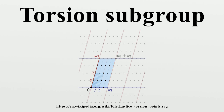Tensoring an abelian group A with Q kills torsion; that is, if T is a torsion group then T⊗Q = 0. For a general abelian group A with torsion subgroup T, one has A⊗Q ≅ (A/T)⊗Q. Taking the torsion subgroup makes torsion abelian groups into a coreflective subcategory of abelian groups, while taking the quotient by the torsion subgroup makes torsion-free abelian groups into a reflective subcategory.